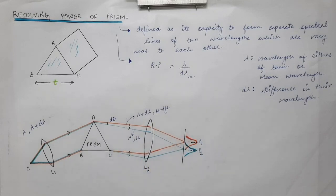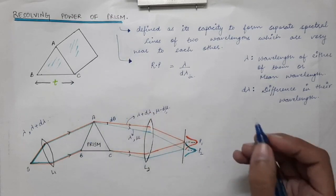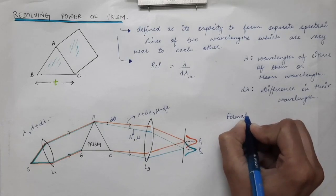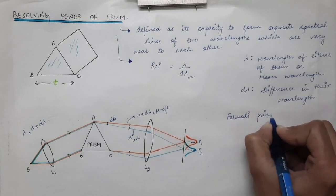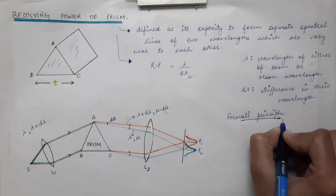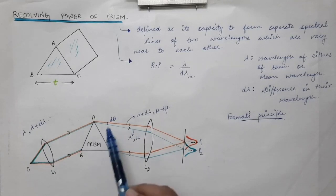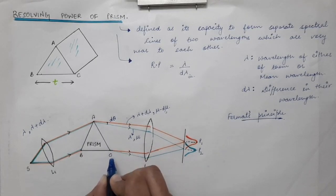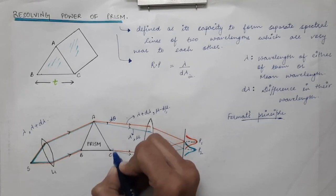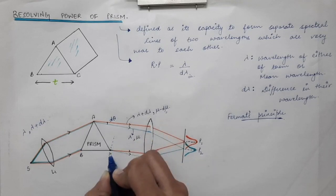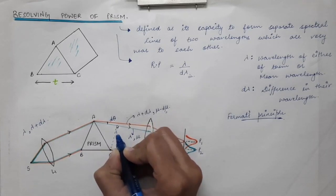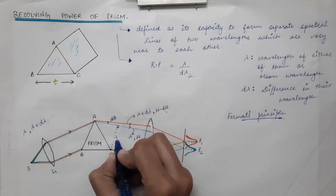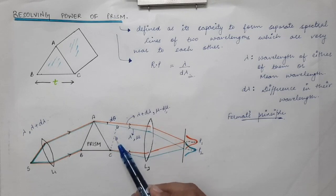This d_lambda difference in wavelength satisfies the Rayleigh criterion and will help us find the resolving power. To find the resolving power of a prism, we will use Fermat's principle. Before applying it, we need to find the expression for the angle d_theta.